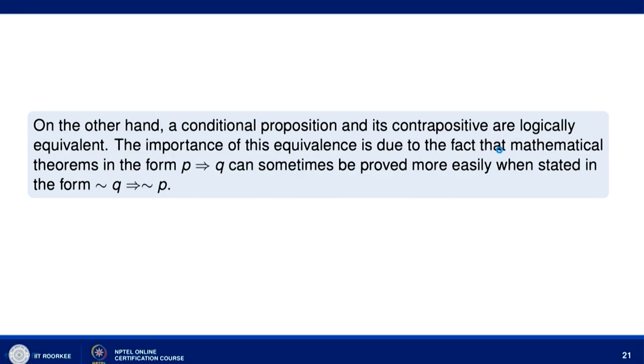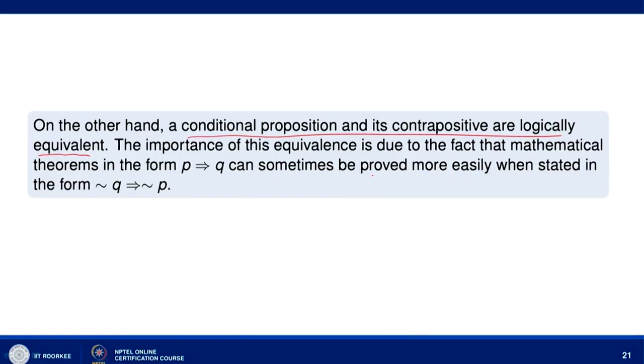A conditional proposition and its contrapositive are logically equivalent, and we use this fact often when proving mathematical theorems. In order to prove that P implies Q, we often consider its contrapositive — that is, we show that not Q implies not P — which sometimes makes the proof easier. With that I would like to end my lecture; thank you very much for your attention.